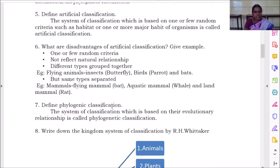Next is define phylogenetic classification. What do you mean by phylogenetic classification? It means evolutionary relationship. So the system of classification which is based on the evolutionary relationship is called phylogenetic classification.